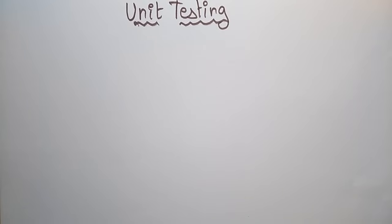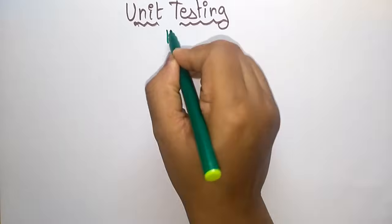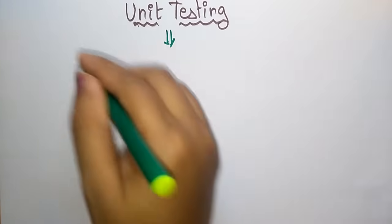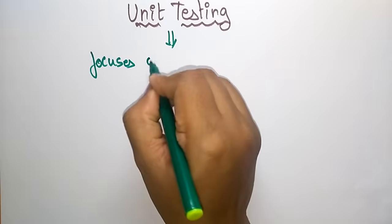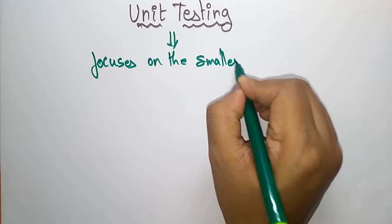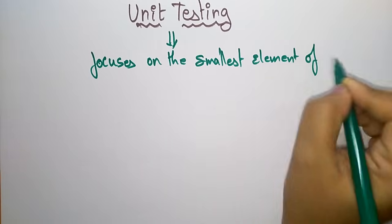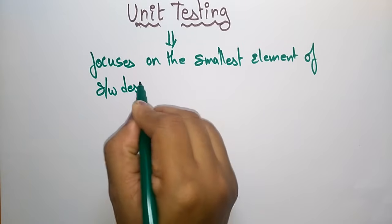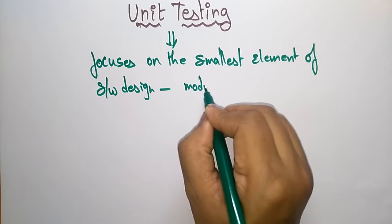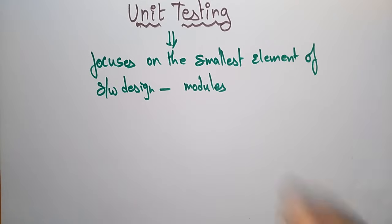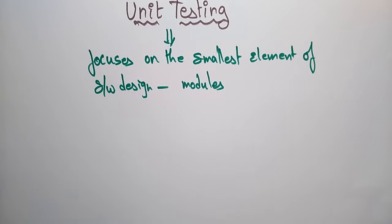Unit testing mainly focuses on the smallest element of software design, like modules or software components. The complete structure is divided into different levels, and unit testing takes the smallest element in the software design and tests it. After that, it is integrated to the next level module and tested again.